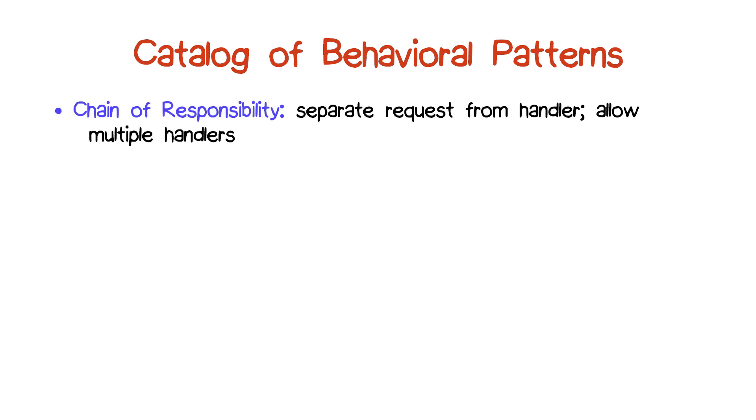First off is the chain of responsibility pattern, which allows you to separate a request from the mechanism by which the request is handled and also allows you to have multiple handlers for a given request.